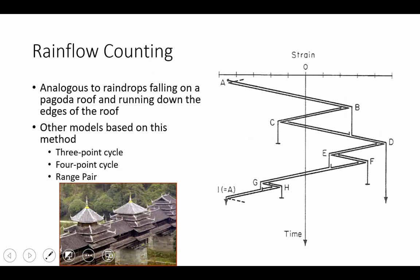Rain flow counting is analogous to raindrops falling on a pagoda roof and how those raindrops would run down the multi-tiered roof of those buildings. In essence, what we're going to do is we're going to take our load history information and rotate it and then draw lines.